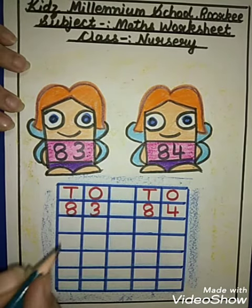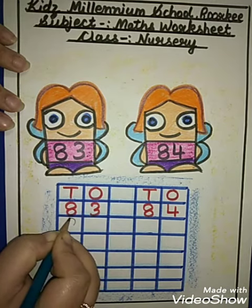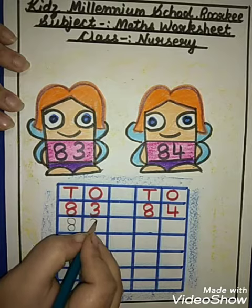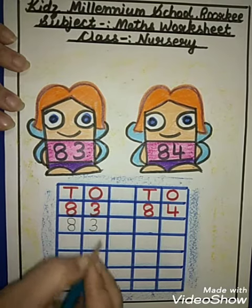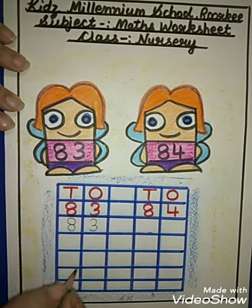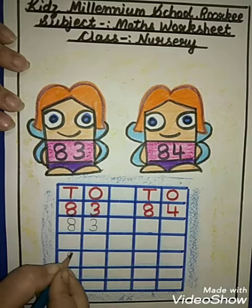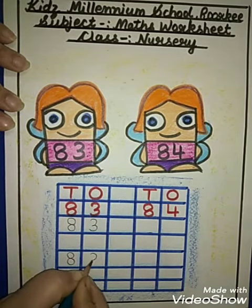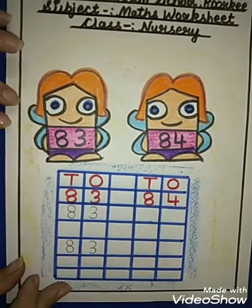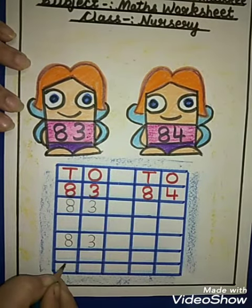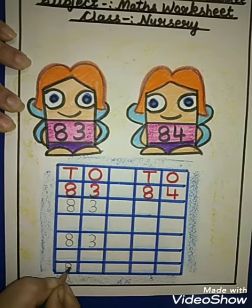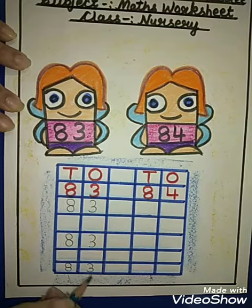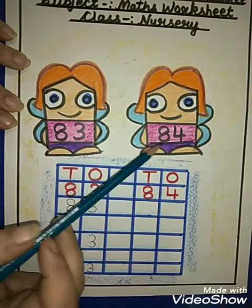So first is 8383. Make a curve joining with another curve — 8. Then make a curve joining with another curve — 3. 8383.